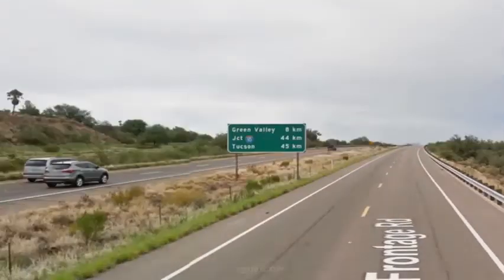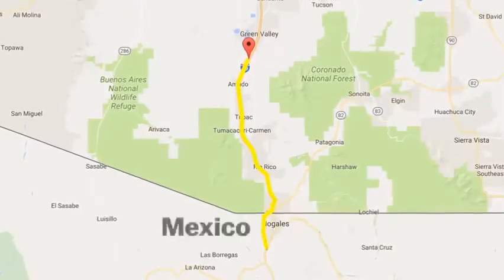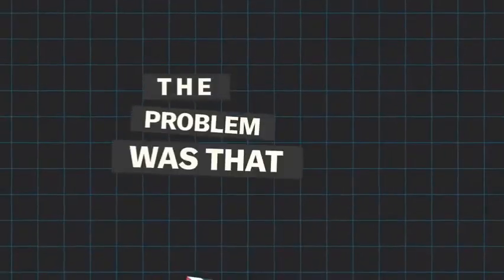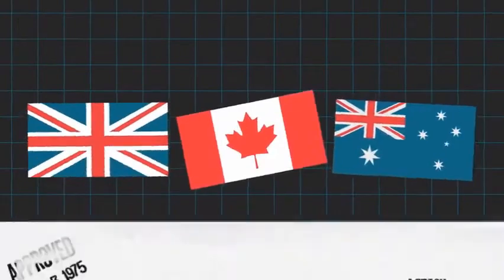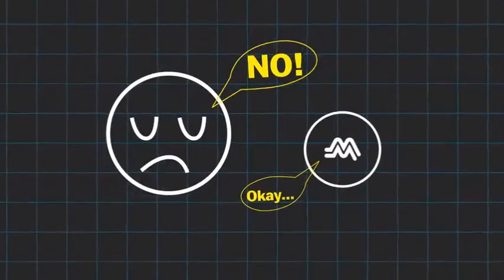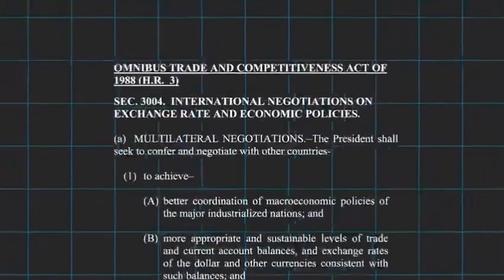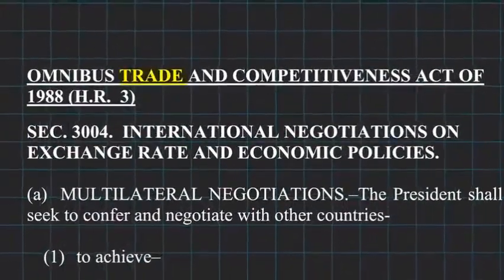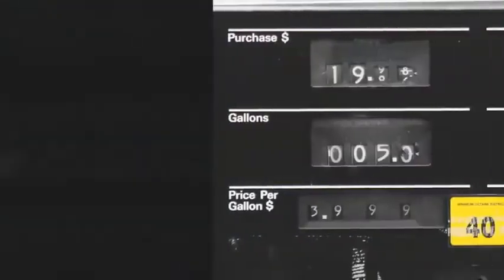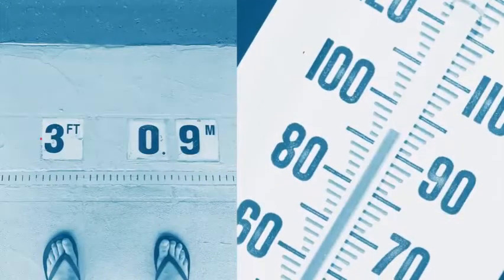The Metric Conversion Act created the only metric highway sign in the US — Interstate 19 connecting Arizona to Mexico — but it didn't go much further than that. Unlike the UK, Canada, or Australia, the law made the switch voluntary instead of mandatory. People resisted the change and the metric board couldn't enforce conversion, so President Reagan disbanded the board in 1982. The next nudge came in 1988 when the metric system became the preferred measure for American trade and commerce, but nothing really stuck with the general public.